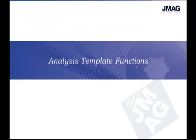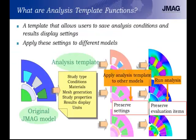Analysis template functions are templates that allow users to save analysis conditions and result display settings, then apply these settings to different models. In JMAG, we start with our original model, run the analysis, and then create a template of that analysis where we set the study type, analysis conditions, material properties, mesh generation, study properties, results displays, and units. All of this is saved as a template that can be applied to other models.